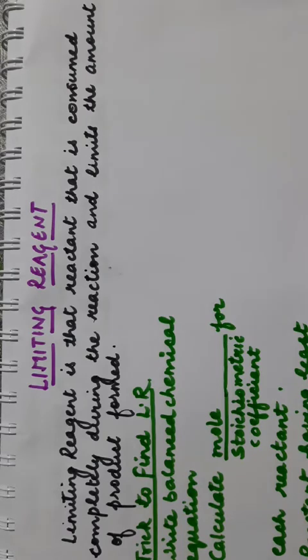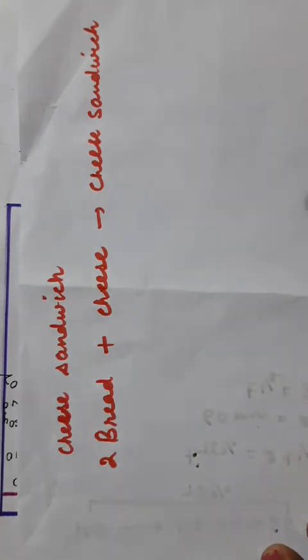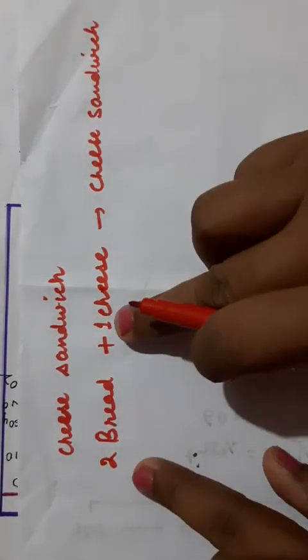We will discuss it with an example from our daily life. Suppose you want to prepare a cheese sandwich. For preparing a cheese sandwich, you need bread and a slice of cheese. You need two breads and one cheese to make one sandwich. This number - two breads and one cheese - is known as the stoichiometric coefficient of the reaction. In a balanced chemical equation, the numbers written before the reactants are known as stoichiometric coefficients.